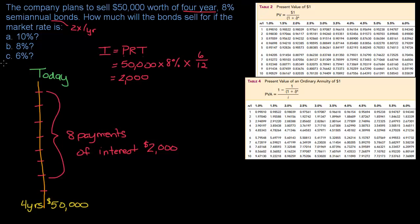As an investor, I have to ask: what would I be willing to pay to receive eight payments of $2,000 interest and $50,000 in four years? The way I determine that is by looking at the market rate. If my bond pays 8% but the market rate is 10% — meaning I can go other places and get 10% — I don't know if I want to buy this bond. I'm going to need some incentive. That incentive is called a discount.